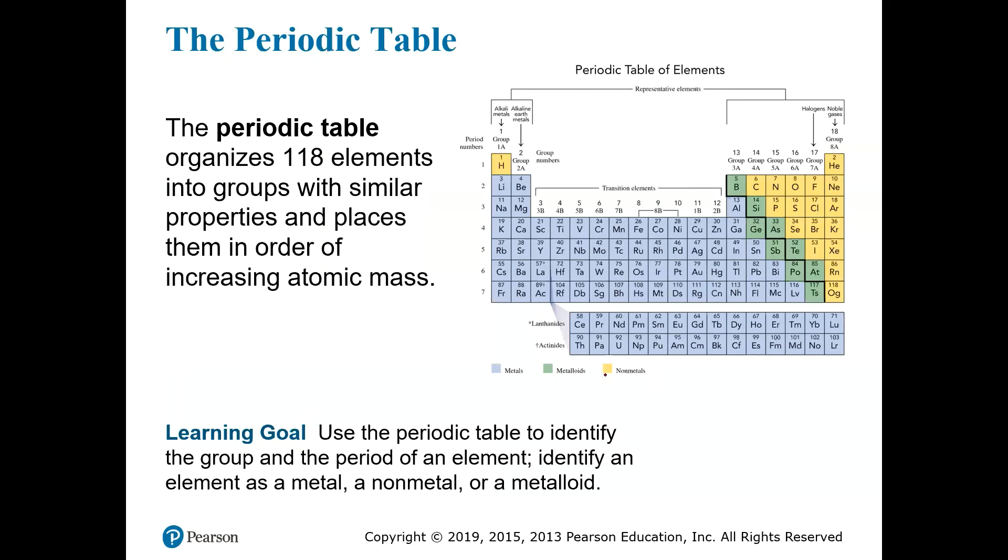The periodic table can be used to identify an element as a metal, a non-metal, or a metalloid. We're going to learn about that right now as well as how to identify the group and period of an element.